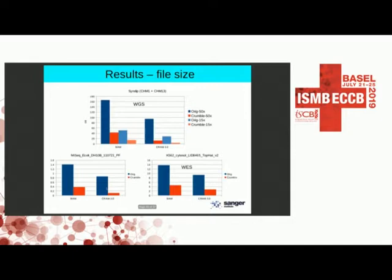In terms of file size, Crumble provides a significant reduction across whole genome shotgun and exome data. It reduces both BAM and CRAM sizes since it reduces the underlying data regardless of format, and will also reduce MPEG-G file sizes. It works even at 15x coverage, which was surprising.